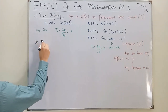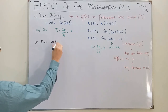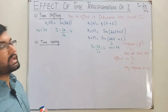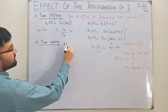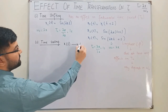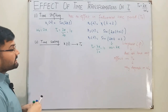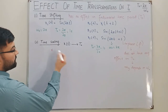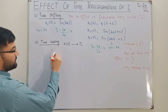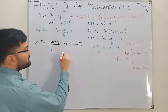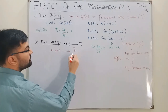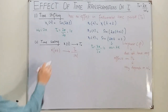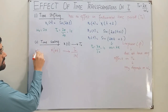The second transformation is time scaling. Time scaling does have an effect on the fundamental time period. If x(t) has fundamental period T₀, then the scaled version x(At) has a fundamental period of T₀ / |A|.